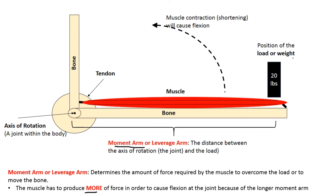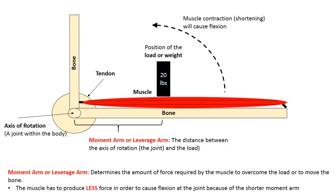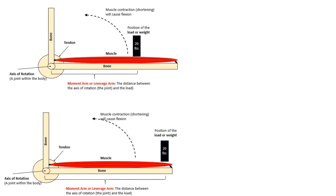Notice: both examples have 20 pounds, but the amount of force required by the muscle differs based on the position of the load relative to the joint. In a third example, the load is moved much closer to the joint — a shorter moment arm — and therefore the muscle has to produce less force. Whether the load is the same matters less than where it is relative to the joint.